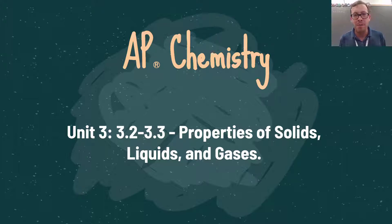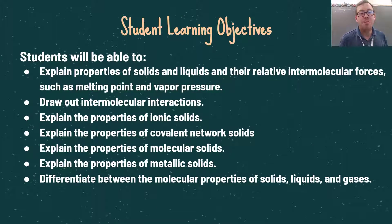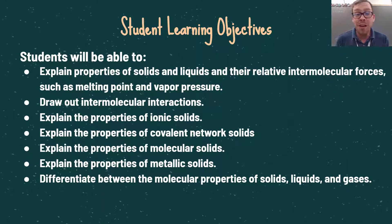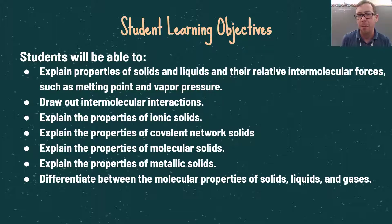We'll dive into a little bit about the difference between solids, liquids, and gases on a molecular level as well. By the end of this video you should be able to explain properties of solids and liquids as well as the relative intermolecular forces such as melting point and vapor pressure. You should be able to draw out intermolecular interactions and describe the properties of ionic, covalent network, molecular, and metallic solids, and differentiate between the molecular properties of solids, liquids, and gases.